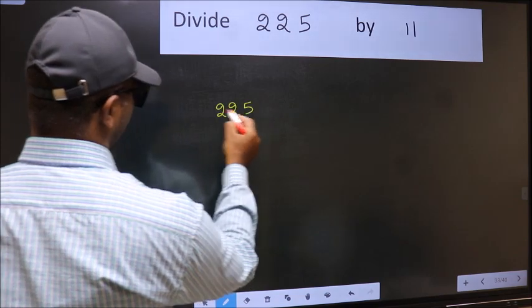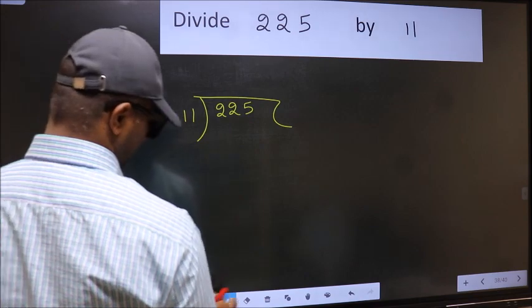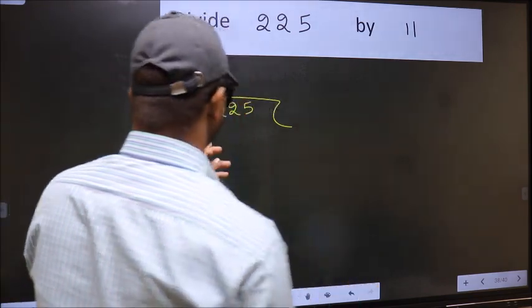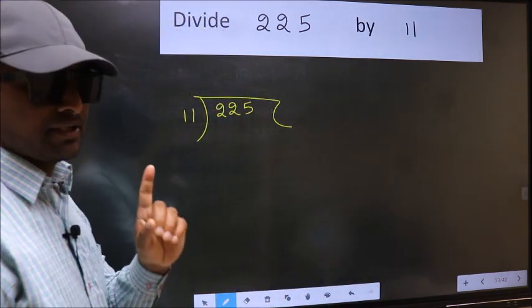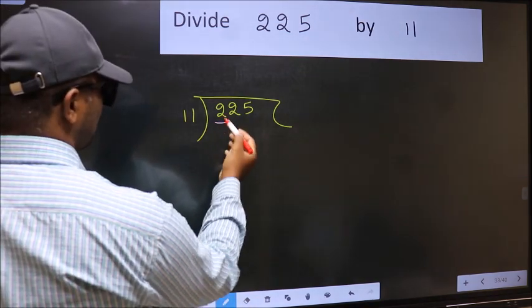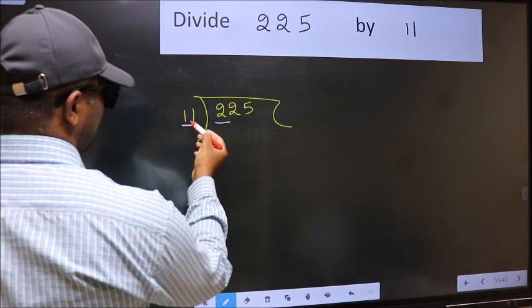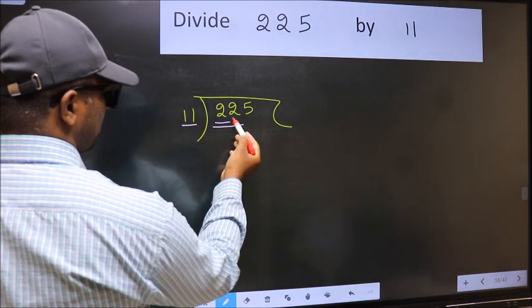225 and 11 here. This is your step 1. Next, here we have 2 and here 11. 2 is smaller than 11, so we should take two numbers, 22.